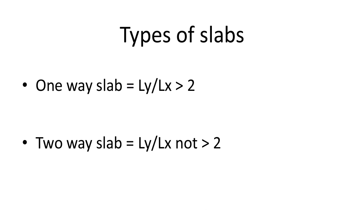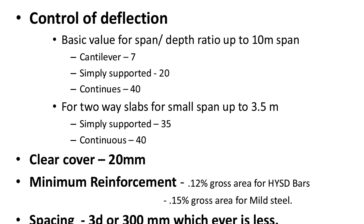There are two types of slabs: one-way slab and two-way slab. A one-way slab is where the ly/lx ratio is greater than 2. A two-way slab is where ly/lx is not greater than 2. Here, ly is the longer direction of the slab and lx is the shorter direction. Please remember: ly/lx greater than 2 means one-way slab; not greater than 2 means two-way slab.